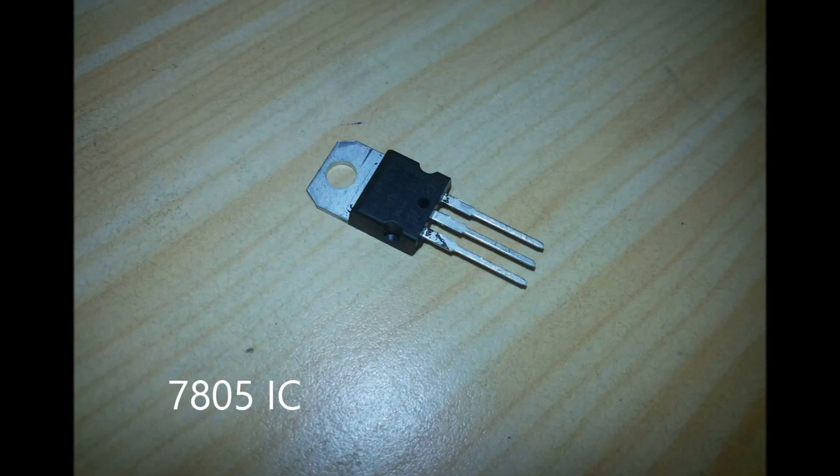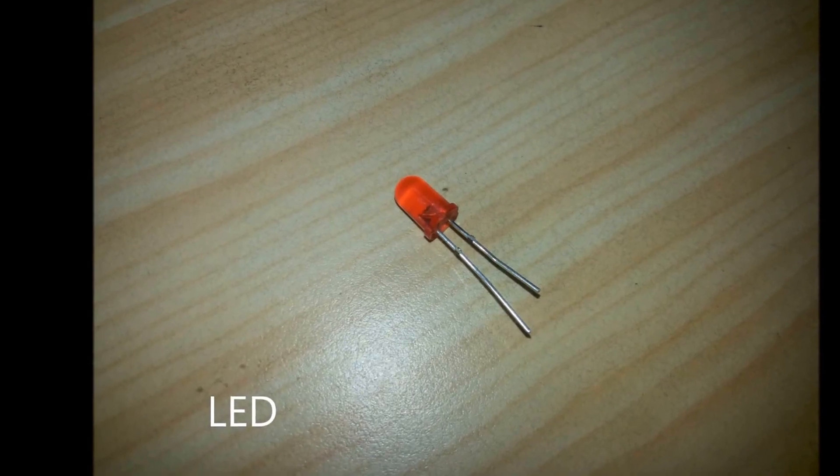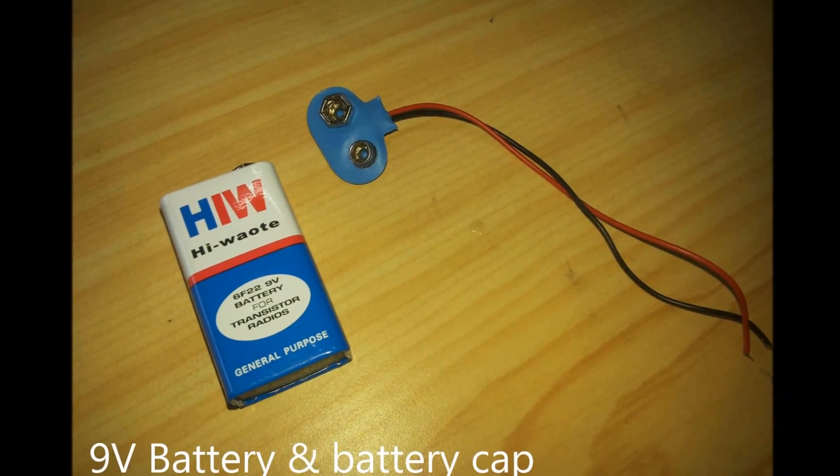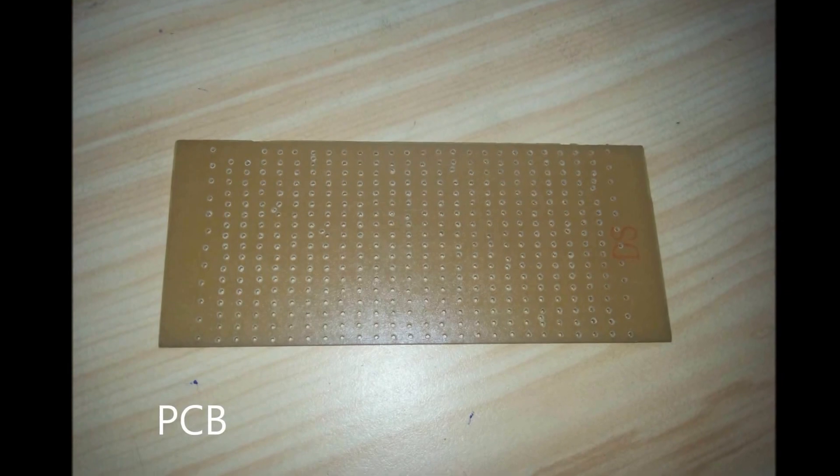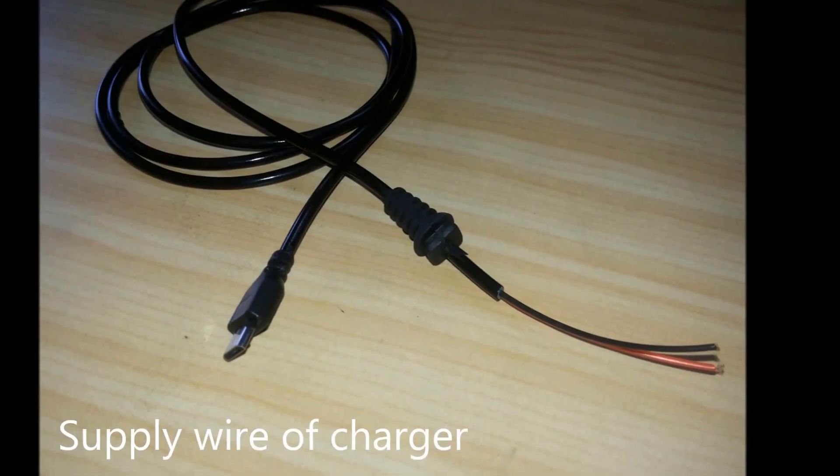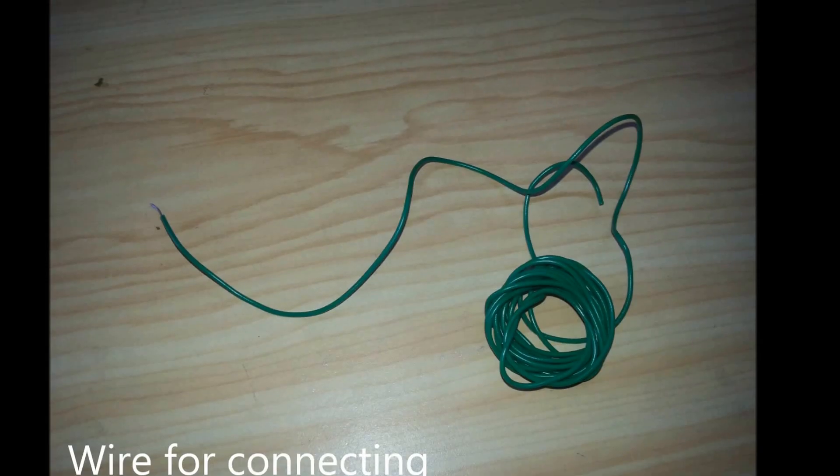Let's have a look at the needed components: 7805 IC, 1 kilohm resistance, 1 LED, 9V battery and battery cap, PCB board, supply wire for charger, soldering equipment, and some wire for connecting.